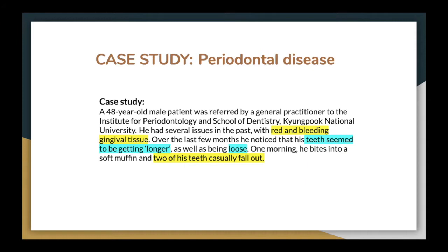Here is a case study regarding periodontal disease. A 48-year-old male patient was referred by a general practitioner to the Institute of Periodontology and School of Dentistry, Kyungpok National University. He had several issues in the past with red and bleeding gingival tissue. Over the last few months, he noticed that his teeth seemed to be getting longer as well as being loose. One morning, he bit into a soft muffin and two of his teeth actually fell out.